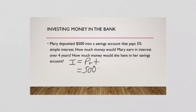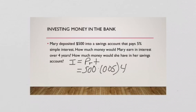How much interest is she getting paid? Five percent — so we switch it to a decimal. And then how many years? Four years. To find this, all we have to do is multiply the numbers together. Make sure you change that 5% to a decimal, so it's 500 times 0.05 times 4. When you multiply those together, you get $100.